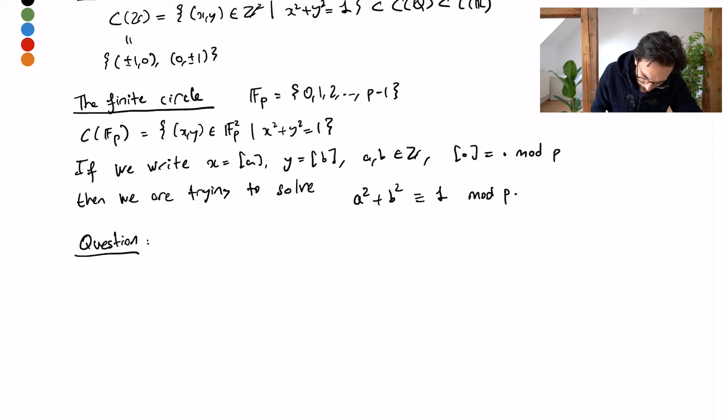Because my field is finite, of course the set of points that satisfy my polynomial equation is going to be finite, and then a natural question to ask is how many points are there. So how many points on my finite circle C(F_p)?